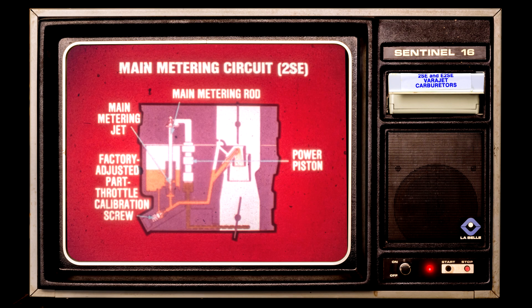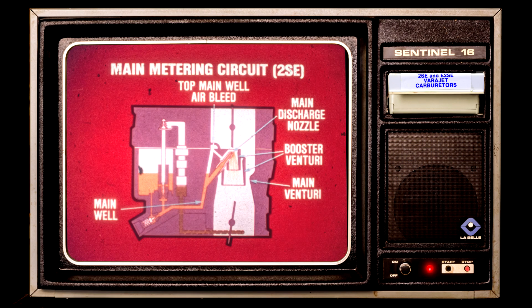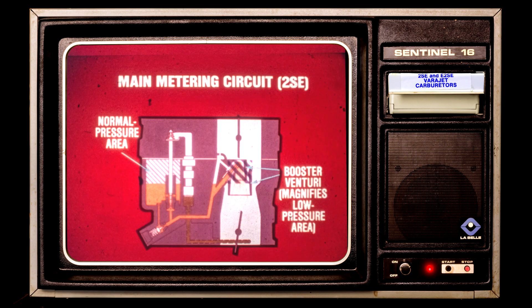The 2SE main metering circuit's chief components include the main metering rod, the main metering jet, a factory-adjusted part throttle calibration screw, a spring-loaded power piston, the main well, the top main well air bleed, the main discharge nozzle, booster venturi, and the main venturi.